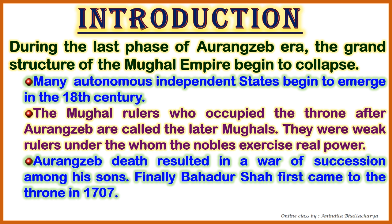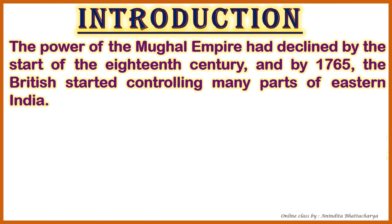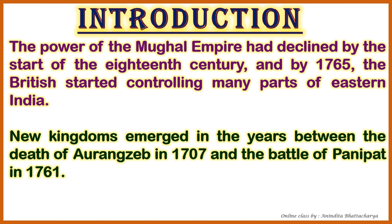Aurangzeb's death resulted in a war of succession among his sons. Finally, Bahadur Shah I came to the throne in 1707. The power of the Mughal Empire had declined by the start of the 18th century, and by 1765, the British started controlling many parts of eastern India. New kingdoms emerged in the years between the death of Aurangzeb in 1707 and the Battle of Panipat in 1761.